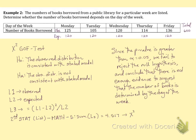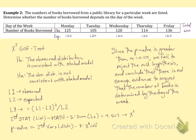Now you need your p-value. To find the p-value, go to DISTRIBUTION and go down to chi-squared CDF — mine is number eight. The lower limit is always whatever your chi-squared statistic is, so it's going to be 4.517 for the lower.